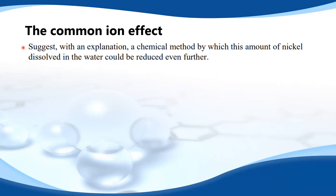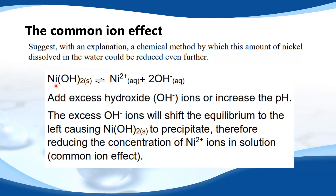Let's try another example. Suggest with an explanation a chemical method by which the amount of nickel dissolved in water could be reduced even further. This question involves the removal of Ni²⁺ ions from wastewater. In a saturated solution there's a dynamic equilibrium between nickel hydroxide and the aqueous ions. We can reduce the concentration of the nickel ions by adding excess hydroxide ions or by increasing the pH.